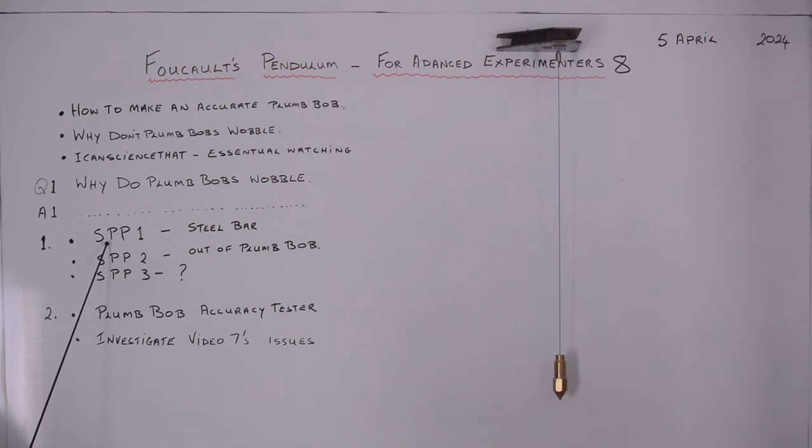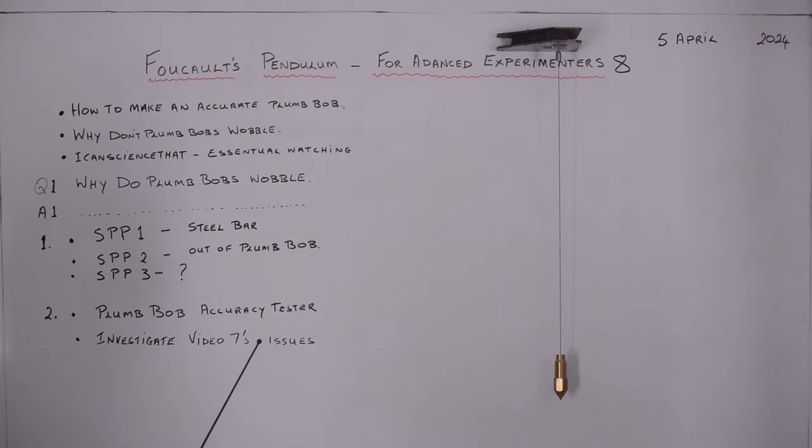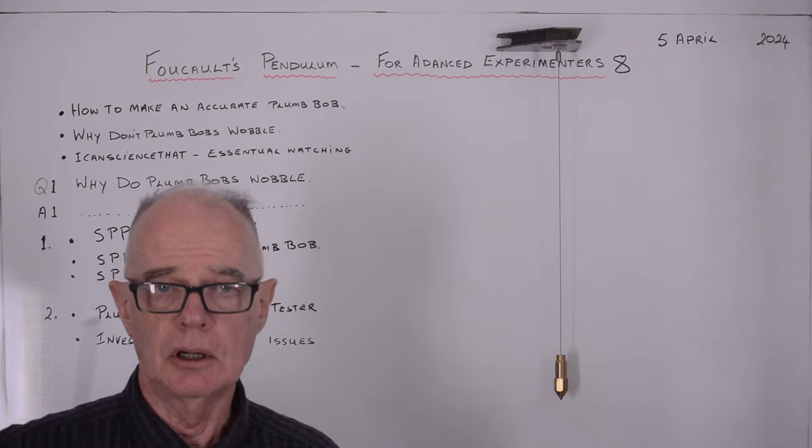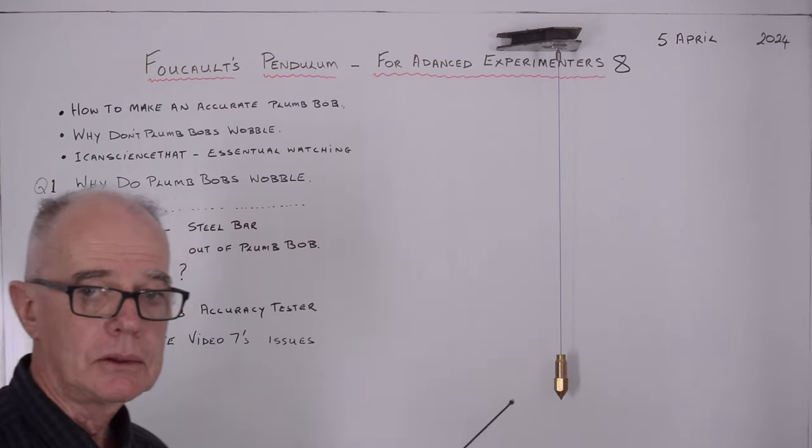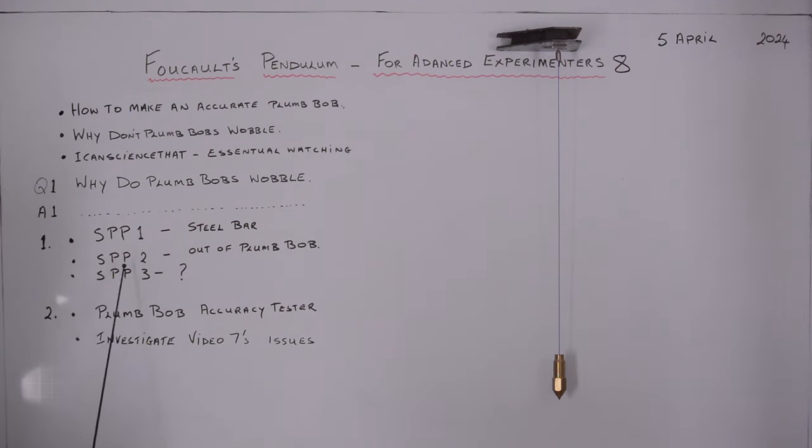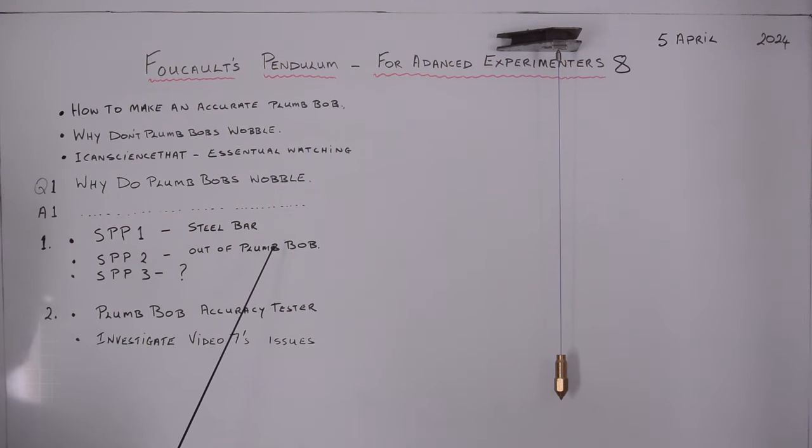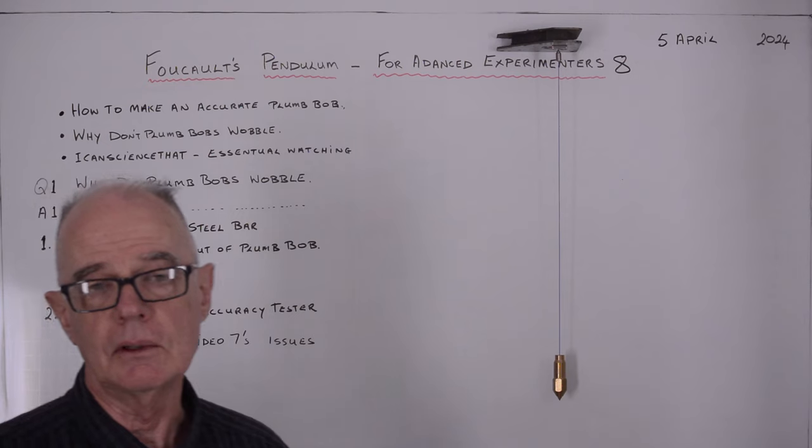If you've been following the series, you'll notice that I've been boring you to death with these static pendulums. The first pendulum I made was static pendulum number 1, which is that steel bar. Static pendulum number 2 was the out of plumb plumb bob, which you've seen in video 7.